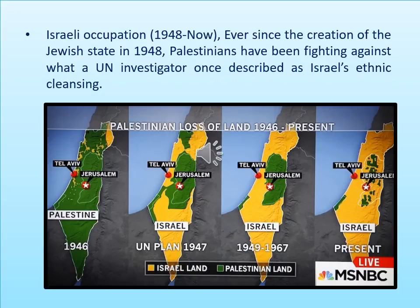The first example of a failed UN peacekeeping operation is the Israeli occupation of Palestinian territory. Israel has been invading Palestinian territory since 1948 until now, and the United Nations cannot solve this problem. Ever since the creation of the Jewish state in 1948, Palestinians have been fighting against what a UN investigator once described as Israeli ethnic cleansing. You can see a picture showing the Palestinian loss of land from 1946 to the present.